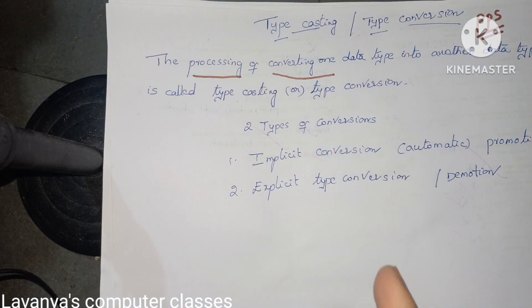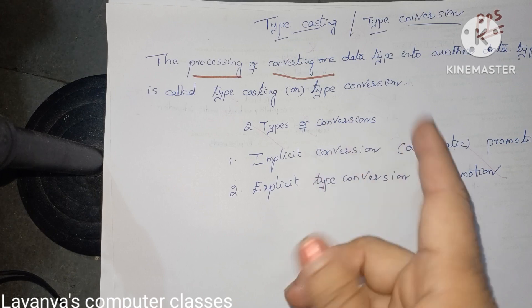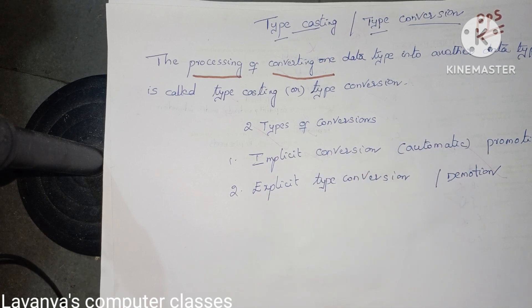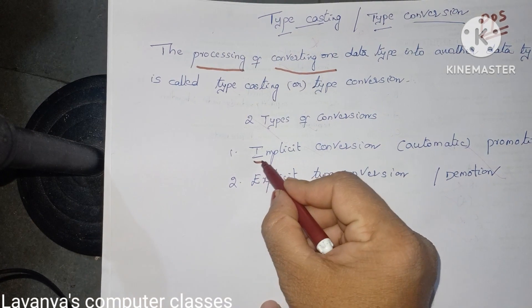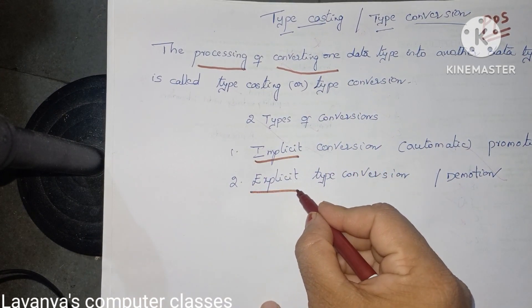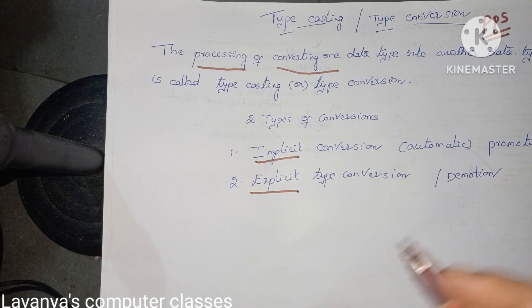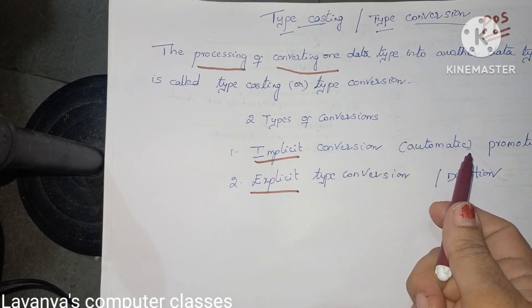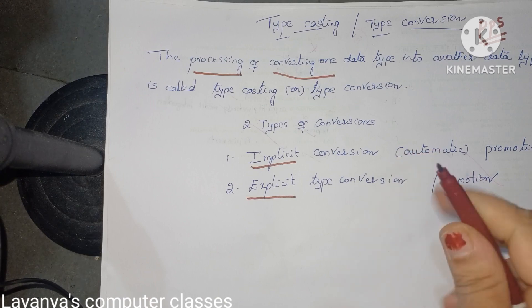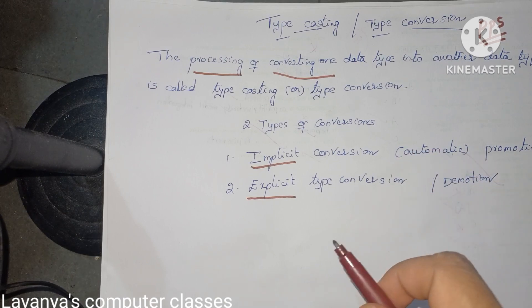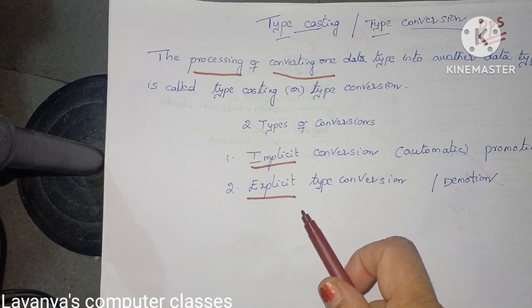There is a difference between typecasting and type conversion, which we will also explain in this video. There are two types of conversions: one is implicit data type conversion and the second one is explicit type conversion. Implicit conversion is done automatically, while explicit conversion you have to do externally using some operator.